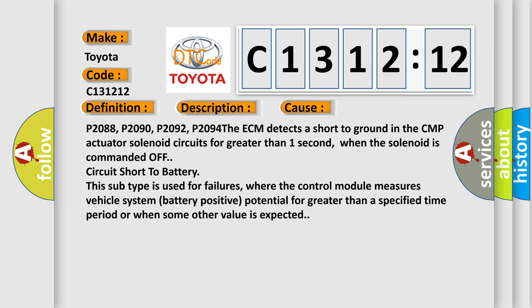When the solenoid is commanded off, circuit short to battery. This subtype is used for failures where the control module measures vehicle system battery positive potential for greater than a specified time period or when some other value is expected.